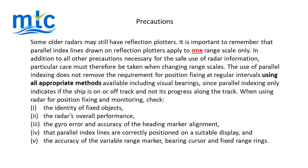The use of parallel indexing does not remove the requirement for position fixing at regular intervals using all appropriate methods available, including visual bearings, since parallel indexing only indicates if the ship is on or off track and not its progress along the track. When using radar for position fixing and monitoring, check the identity of fixed objects, the radar's overall performance, the gyro error and accuracy of the heading marker alignment, that parallel index lines are correctly positioned on a suitable display, and the accuracy of the variable range marker, bearing cursor, and fixed range rings.